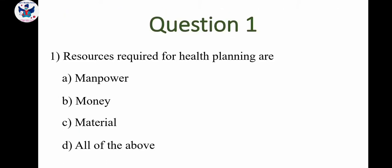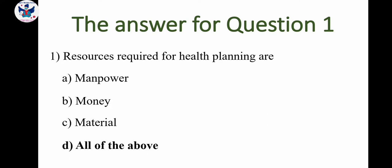Question 1: What are the resources required for health planning? Option A: manpower, B: money, C: material, D: all the above. For health planning, manpower is required, money is required, and material is also required. So the answer for question 1 is all the above.